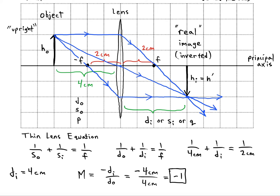Alright, now what is the meaning of that? Well it means that the image is not going to be bigger or smaller than the original object, but it is going to be inverted. And the negative sign tells us that we'll have an inverted image.